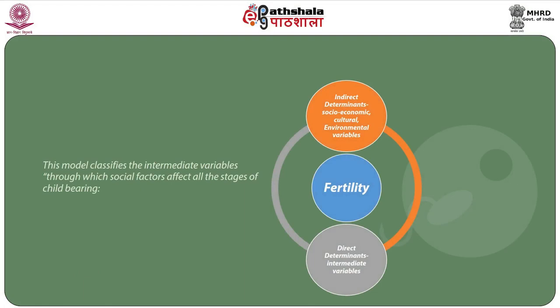The model that Davis and Blake developed was as follows. There are indirect determinants such as socio-economic, cultural and environmental variables. There are also direct determinants — intermediate variables — which affect fertility. This model classifies the intermediate variables through which social factors affect all the stages of childbearing.